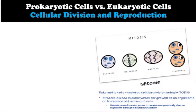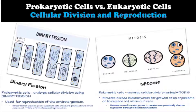Eukaryotic cells undergo cellular division using a process called mitosis. Mitosis is used in eukaryotes for growth or to replace old, worn-out cells. Meiosis is used in eukaryotes to create new, genetically diverse organisms through the process of sexual reproduction.